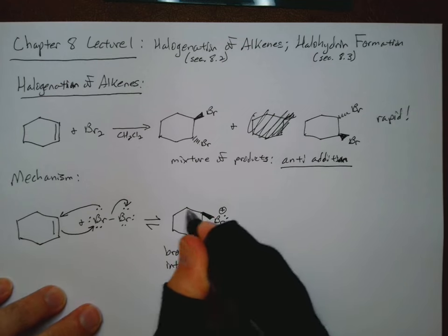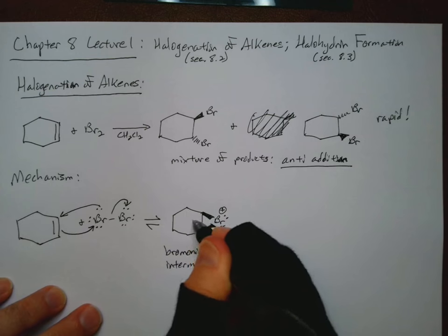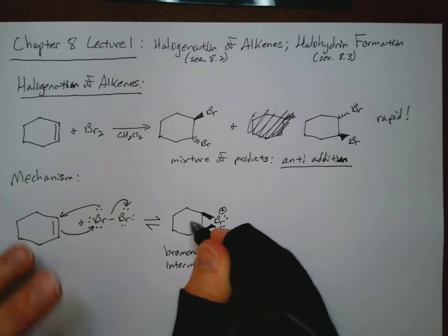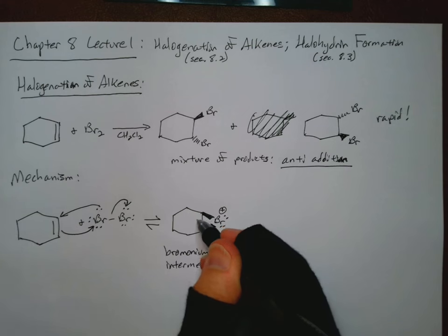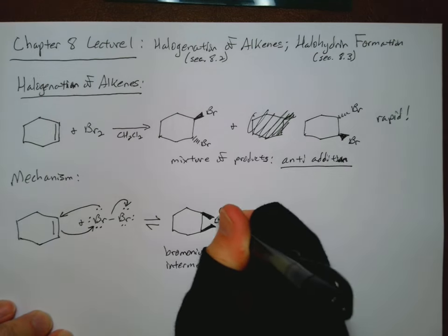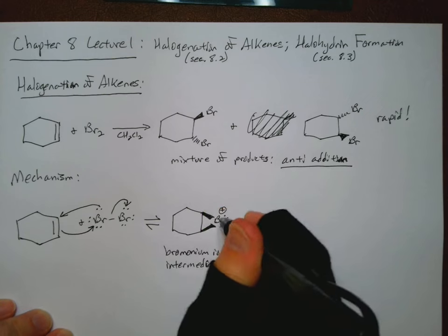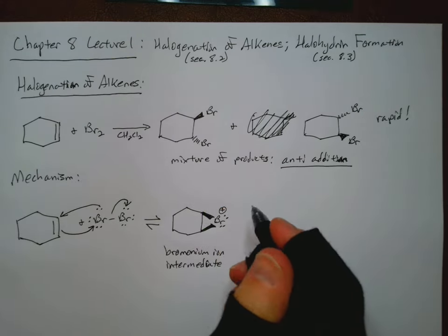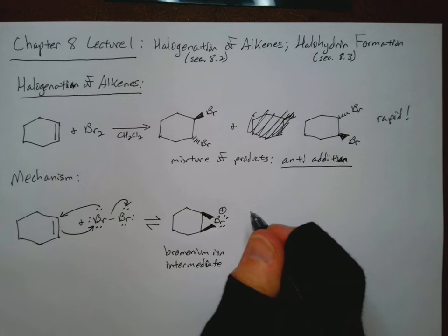We get something called a bromonium ion. And that's the type of intermediate that we get. Now, this has a three-membered ring. And in this case, if we're saying that our six-membered ring here is in the plane of the paper, this ring is kind of pointing up. And the bromine is part of it. Of course, three-membered rings are going to be rather unstable. They're highly strained.